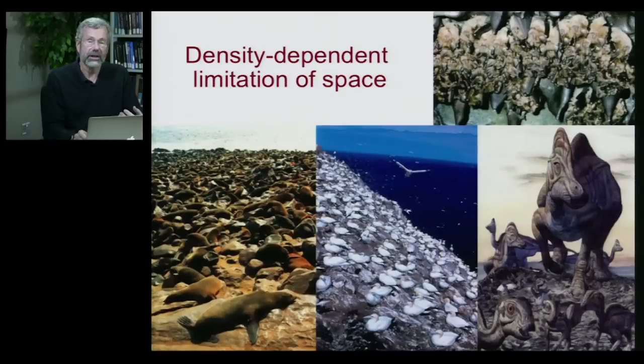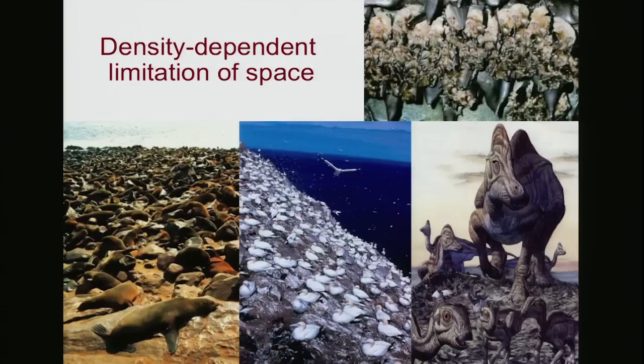There's also extreme density dependence in space in many different species, especially those with colonial nesting — bats roosting in a cave, seals on a beach, colonial birds on cliffs. Even the dinosaurs millions of years ago: there were only certain kinds of places that they could raise their offspring safely, and as these got too crowded, the excess individuals would have to try to raise their offspring in an insecure place. This is a very tight limit on how many individuals could ever be breeding in an area at a given time.